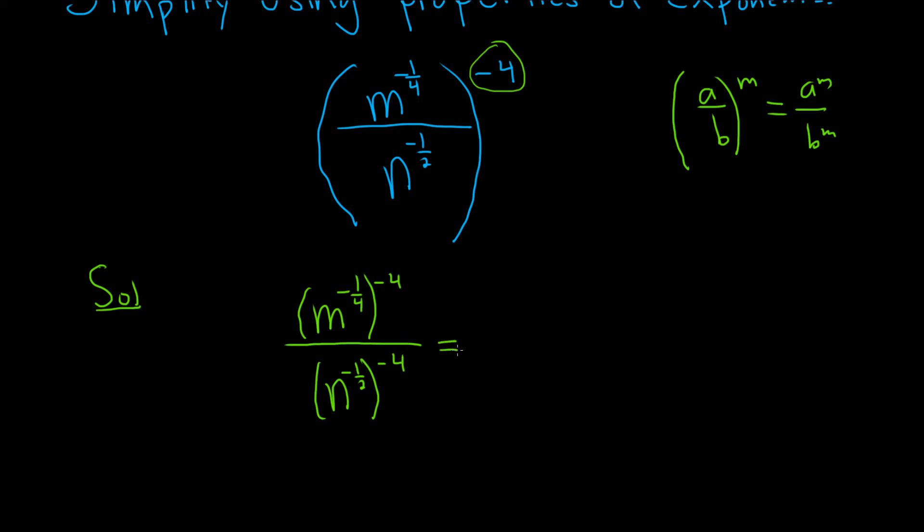Now the next step is to use the rule that says whenever you have a variable to a power to a power like this, you just multiply. So that's what we're going to do now. So we're going to multiply.